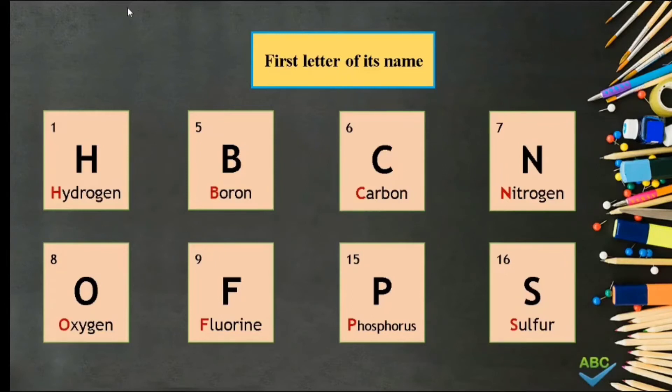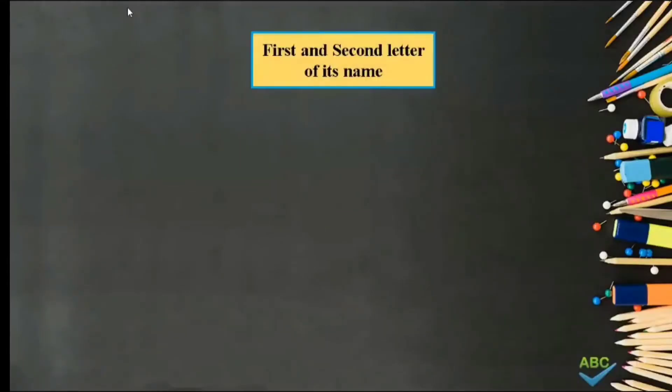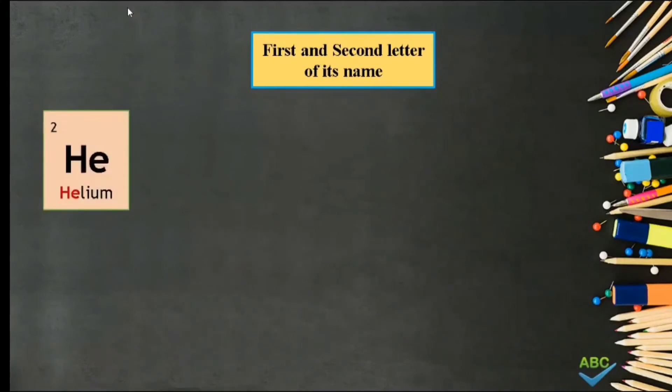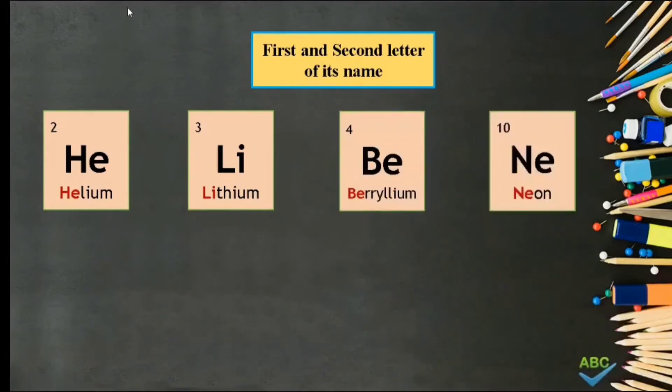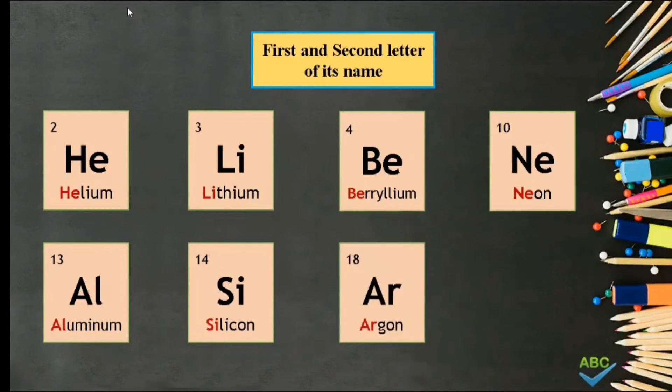Number 2. Based on the first and second letter of its name. Examples of this are Helium He, Lithium Li, Beryllium Be, Neon Ne, Aluminum Al, Silicon Si, Argon Ar, and Calcium Ca.